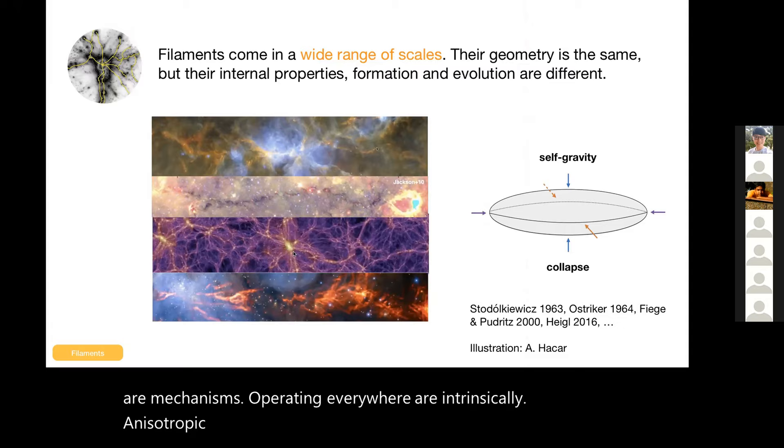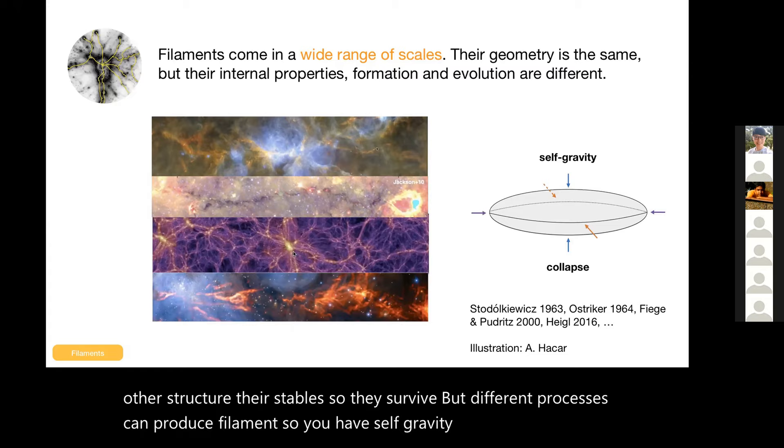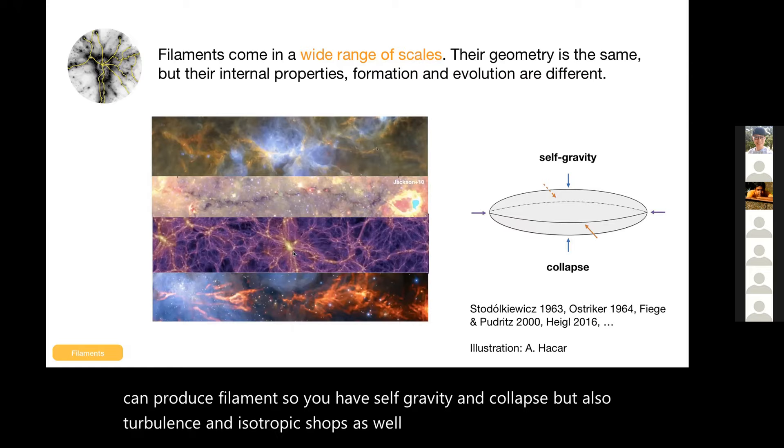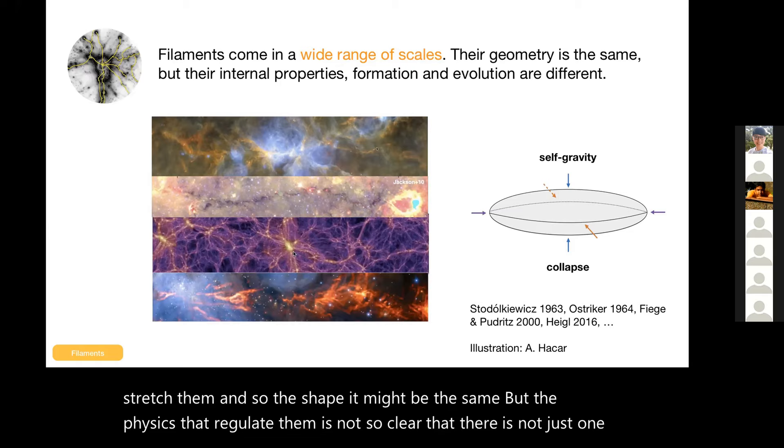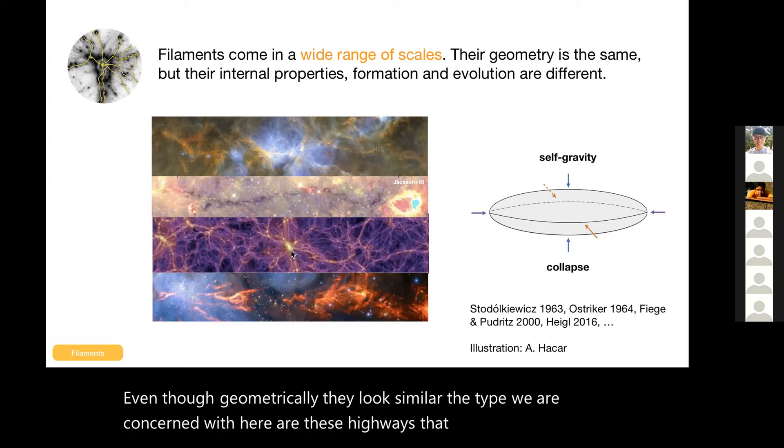If you have an ellipsoidal distribution, anything that compresses things isotropically will compress first in one direction to produce flat pancake-y things, then produce more elongated structures and then you have your filament. That also means we tend to form filaments more than any other structure. They're stable so they survive, but different processes can produce filaments. You have self-gravity and collapse, but also turbulence and isotropic shocks as well as magnetic fields can stretch them. The shape might be the same, but the physics that regulate them is not. Clearly there's not just one type of filament, even though geometrically they look similar. The type we are concerned with here are these highways that are going into the cluster.